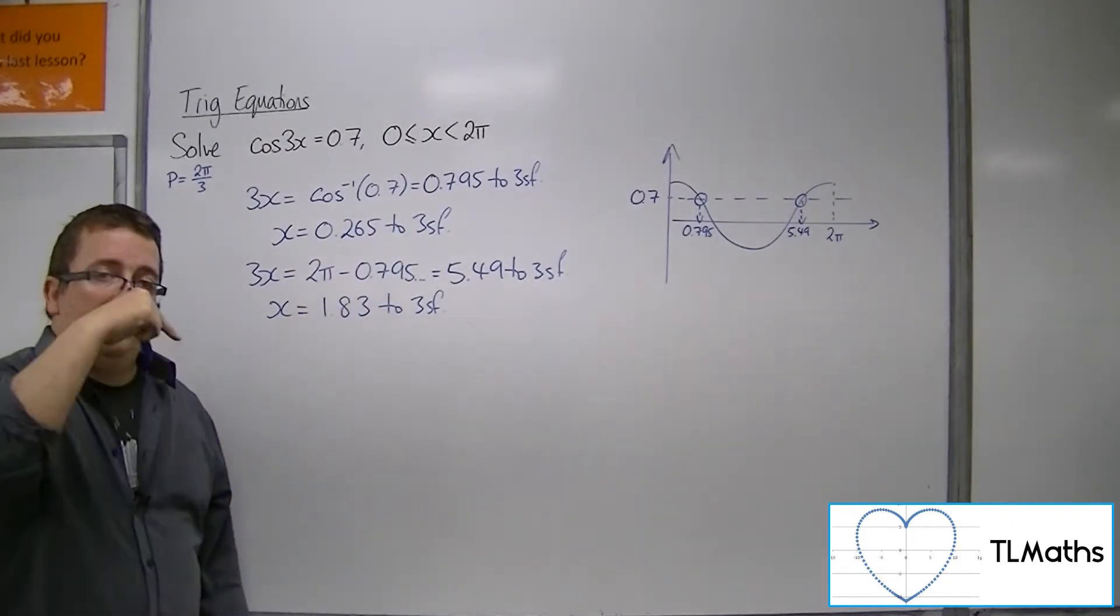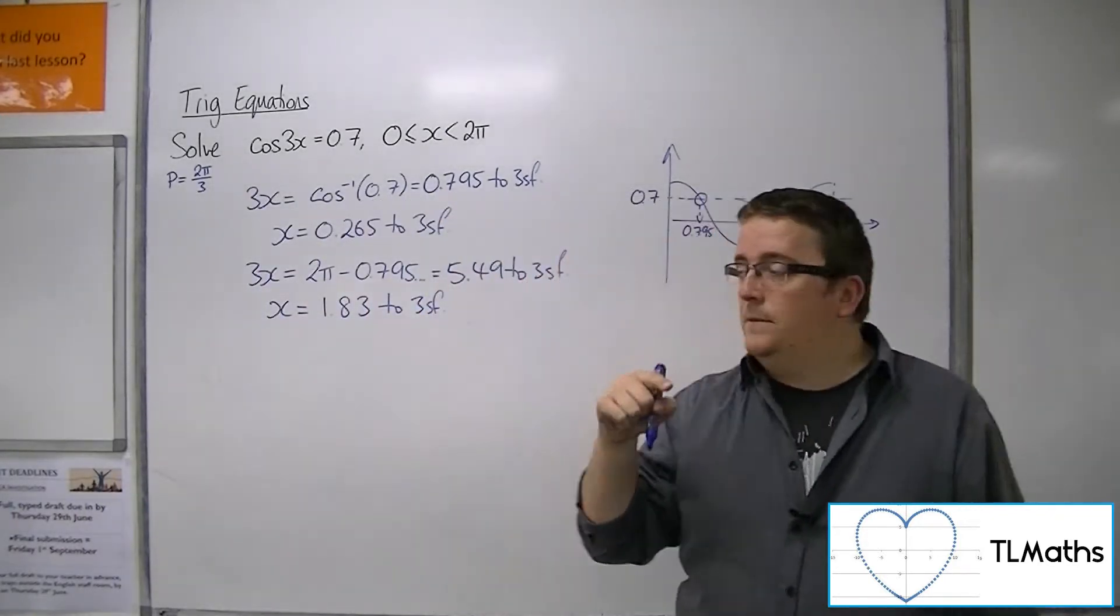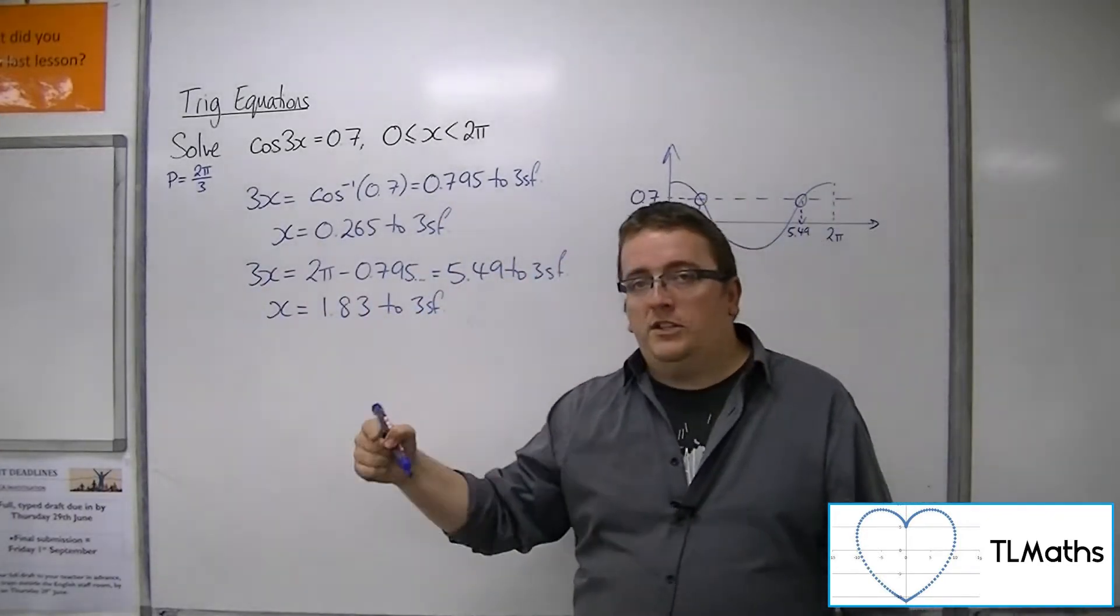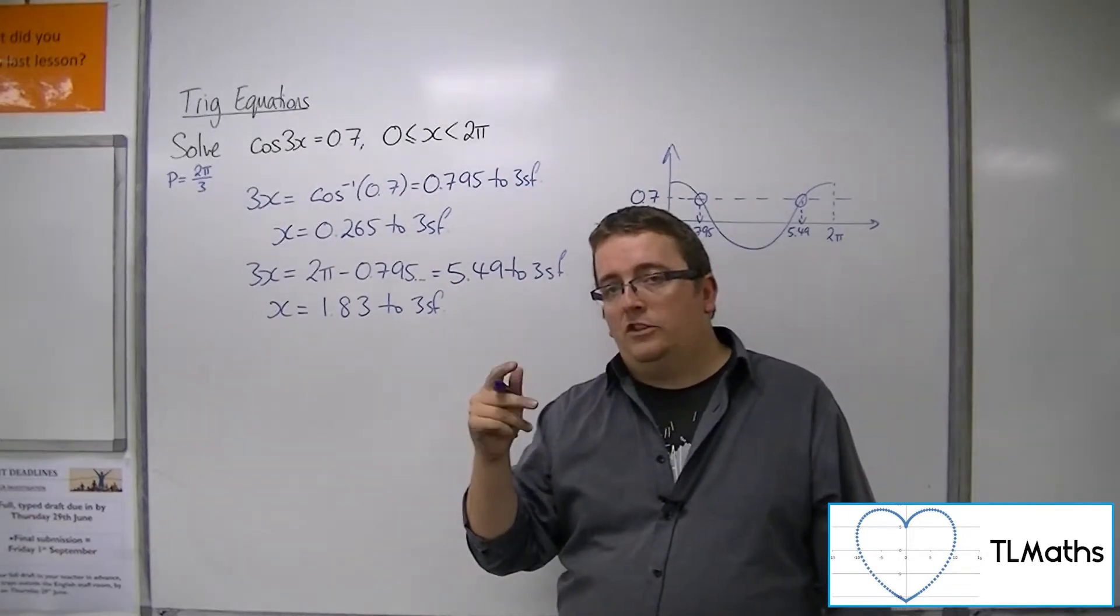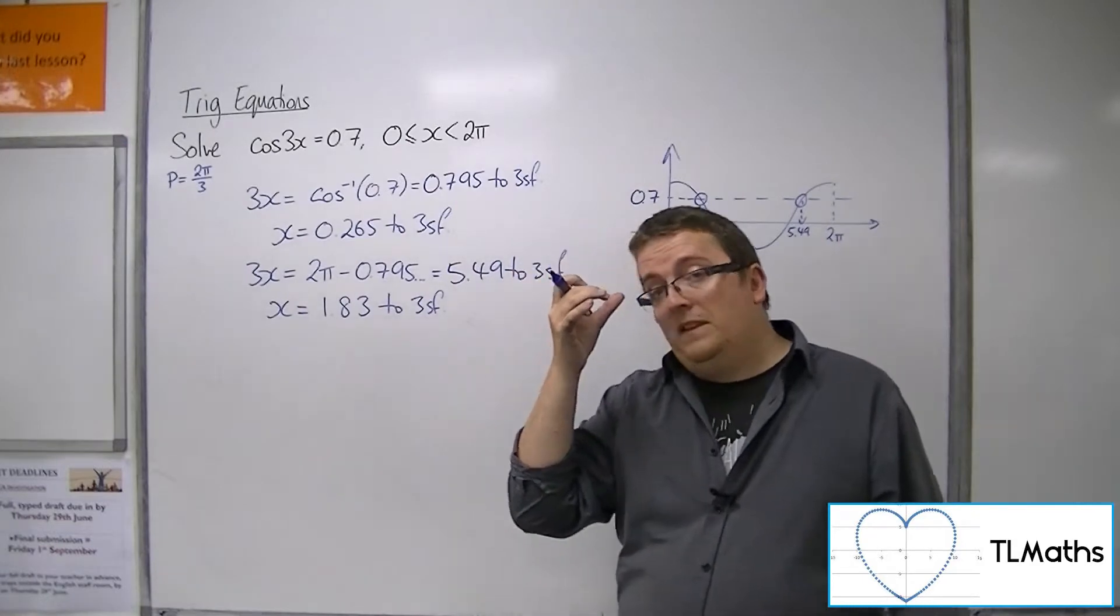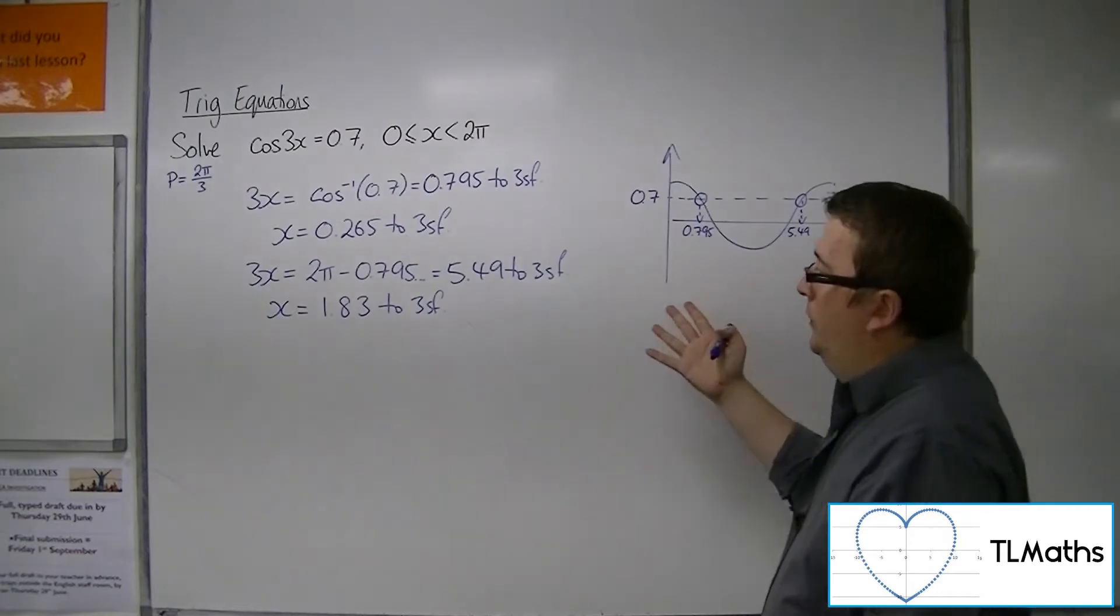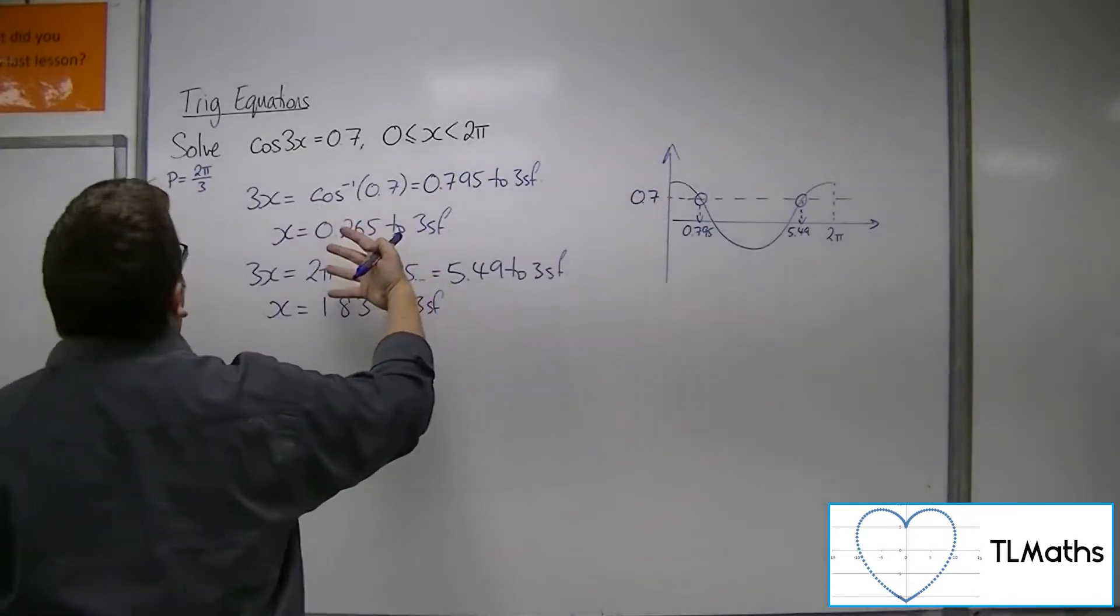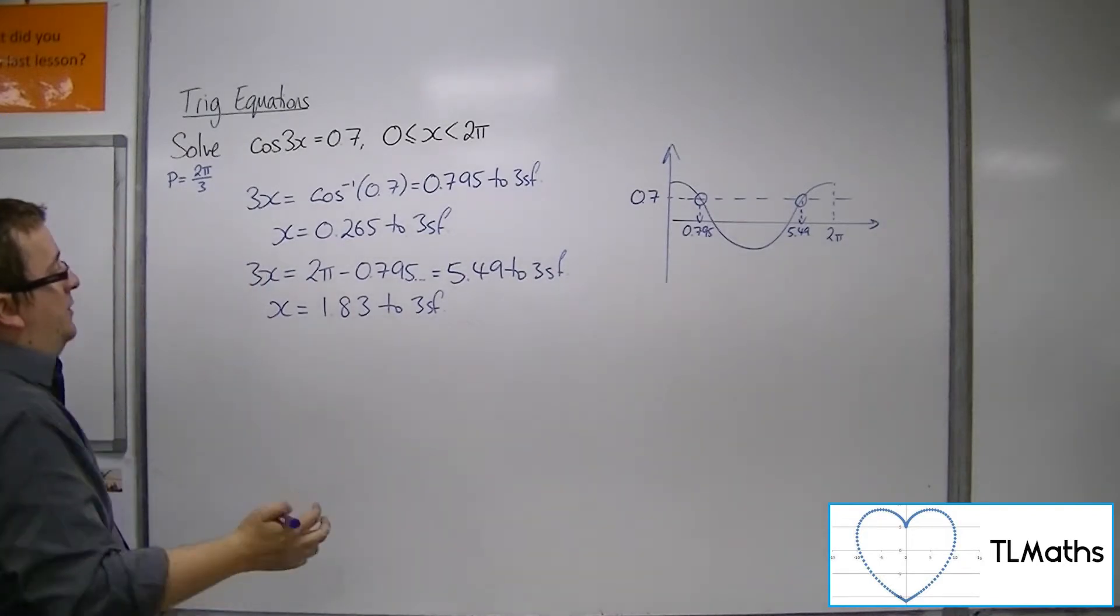Because cos(3x) is a stretch by factor 1/3 parallel to the x-axis, we can fit 3 of the cosine curves between 0 and 2π. So there are actually 6 solutions rather than the traditional 2. We'll add 2π/3 to both values and then probably add 2π/3 again to both.